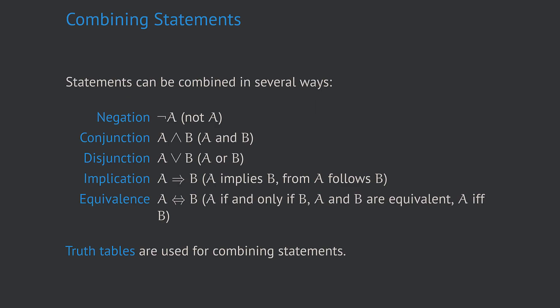In logic, we can build new statements from existing statements by combining them. The truth or falsity of the new combined statement will depend on the truth or falsity of the existing statements. The first combination, which is rather modification than a combination, is negation. Negation takes an existing statement a and turns it into not a, that means its contrary. It is denoted with a little horizontal dash with a little edge in front of the original statement. The negation of a statement a is simply called not a.